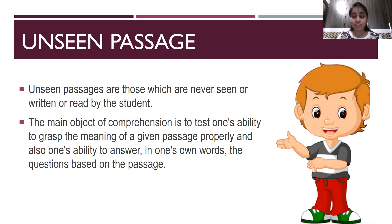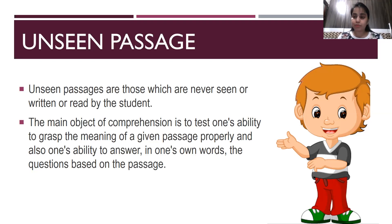Unseen passages are those passages which have never been seen, written or read by the student. As you can see the word 'unseen' — un plus seen — and we just learned that the meaning of the prefix 'un' is 'not.' So something which you have not seen before is called unseen. A passage which you have not seen or read before is called an unseen passage. The main object of comprehension is to test one's ability to grasp the meaning of a given passage properly and one's ability to answer questions based on the passage in one's own words.